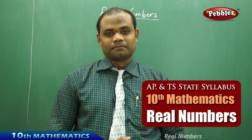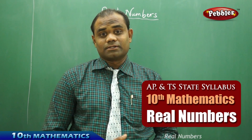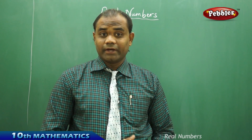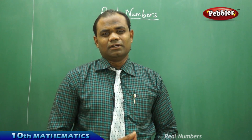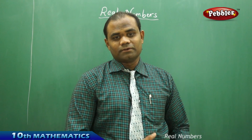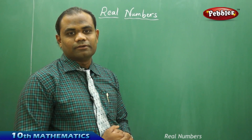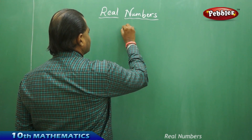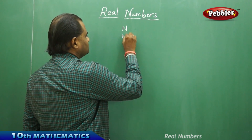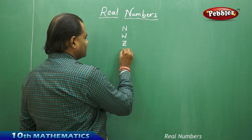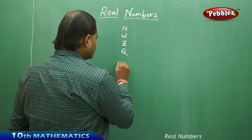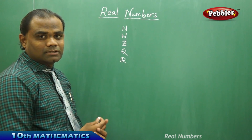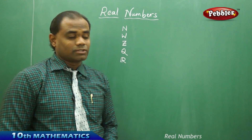Real numbers is the topic for this session. We will discuss the different types of numbers already covered in lower classes, including natural numbers, integers, rational numbers, and irrational numbers. Before we start with real numbers, let's look at a mapping diagram of the different kinds of numbers: natural numbers (N), whole numbers (W), integers (Z), rational numbers (Q), and real numbers (R).